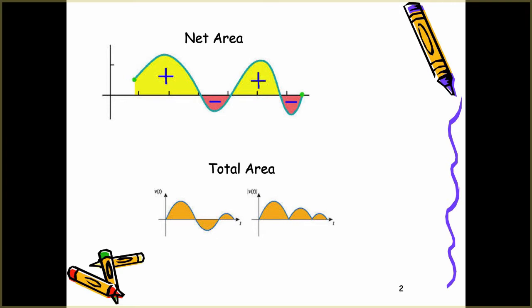For total area, we want the areas both above and below the x-axis. As you see in the bottom picture, the stuff that's below, we reflect them across the x-axis, so they all become positive areas. This will give us the total area of the curve.